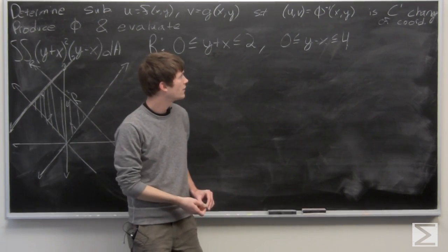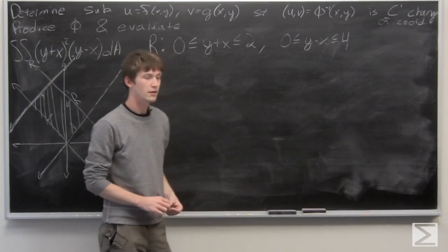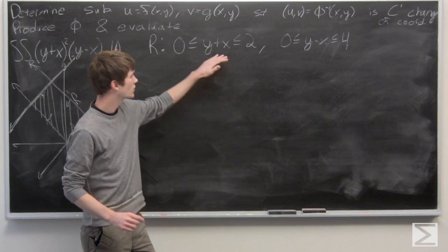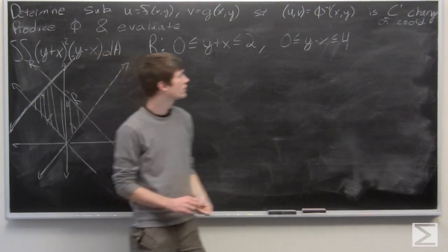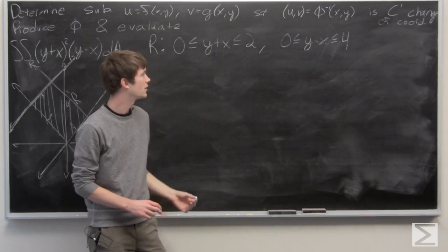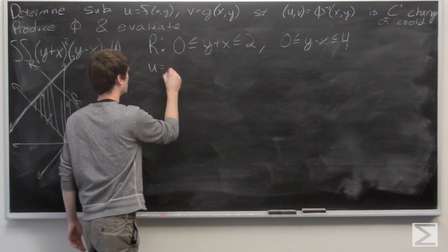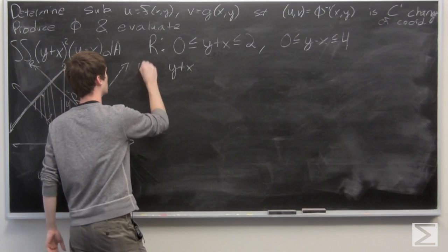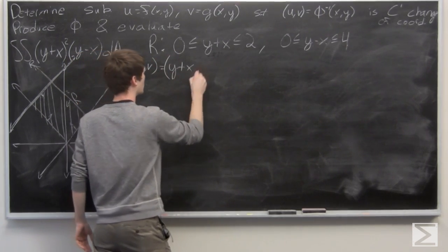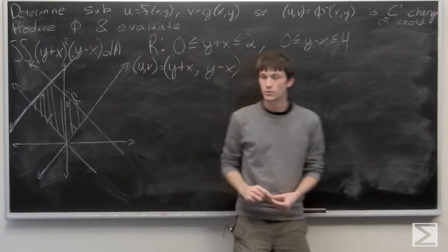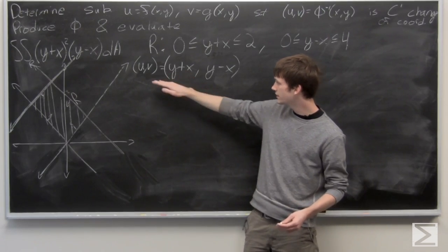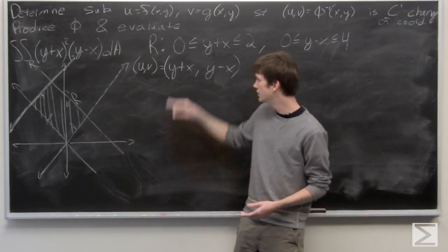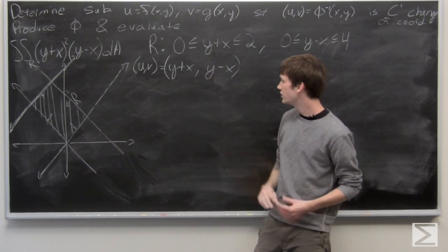We want to find u and v such that we have a smooth change of coordinates. Looking at how our region is bounded, it makes sense to let y + x be one of our variables and y - x be the other. So we'll let u equal y + x and v equal y - x. Our function f(x, y) = y + x and g(x, y) = y - x.